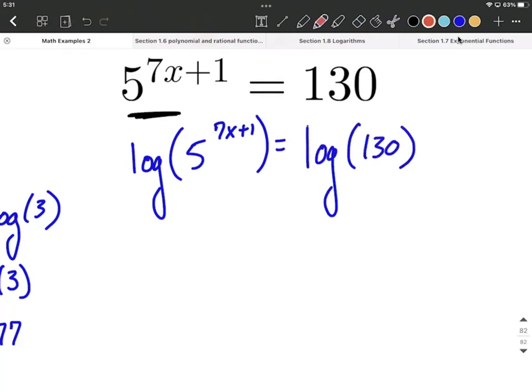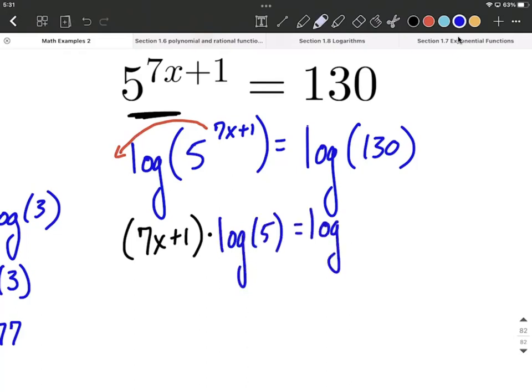From here, we're allowed to use our logarithmic properties that say this exponent can come down in front and become a multiple. So the entire exponent, the 7x plus 1, is going to be down in front and multiplied by log of 5, and that's going to equal log of 130.